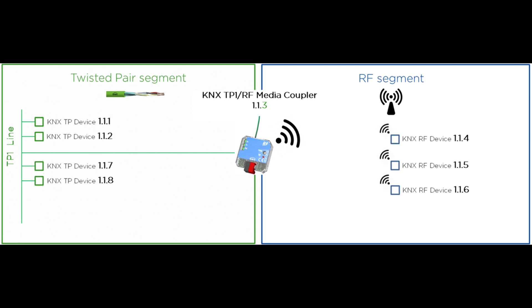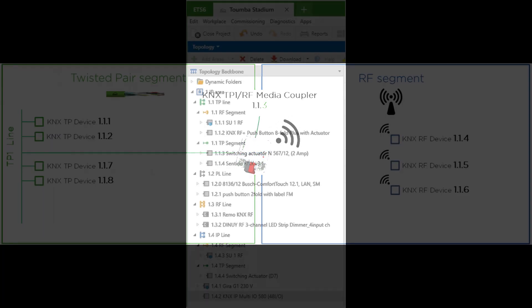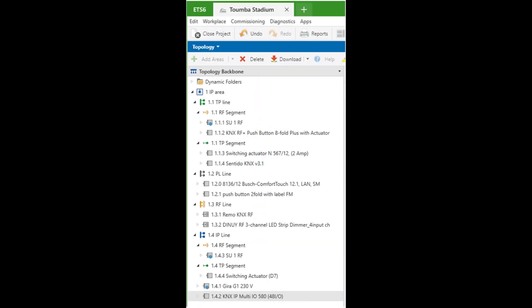A segment coupler is an extension of a media coupler that can connect line segments together regardless of their medium type. One segment coupler allows the extension of an existing KNX TP line with RF devices, or even the connection of small TP islands to KNX IP with filtering.